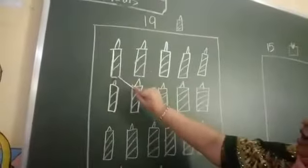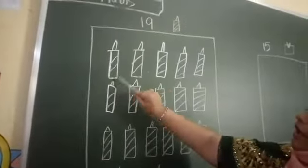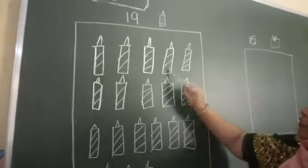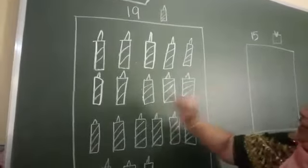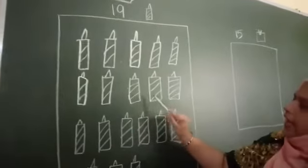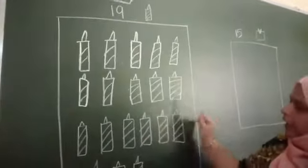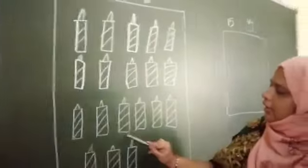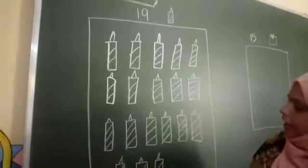You draw the candles — 19 candles we have to draw. 1, 2, 3, 4, 5, 6, 7, 8, 9, 10, 11, 12, 13, 14, 15, 16, 17, 18, 19. 19 candles is there.